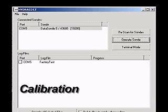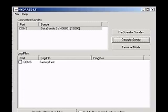Calibration. Establish a connection to the sonde with Hydrus 3LT. Click the button labeled Operate Sonde.